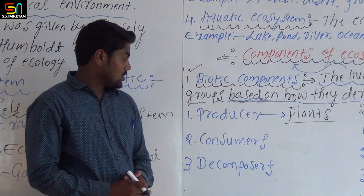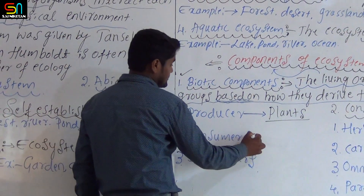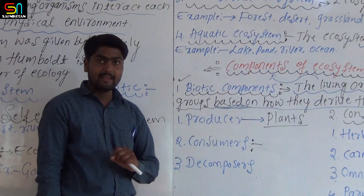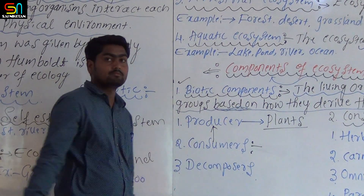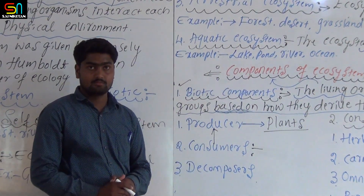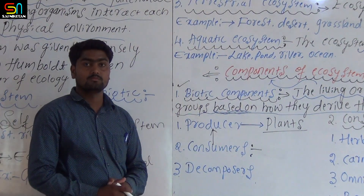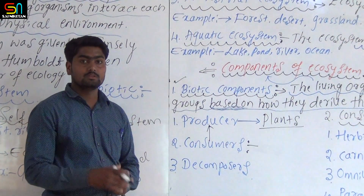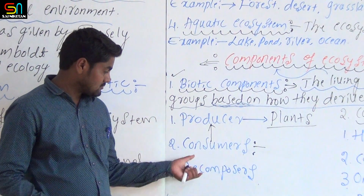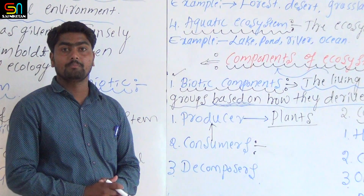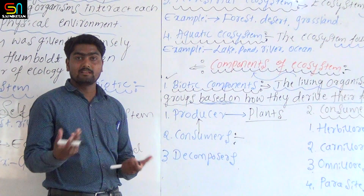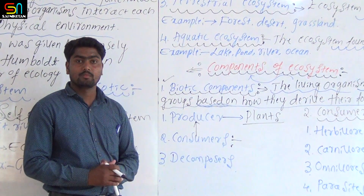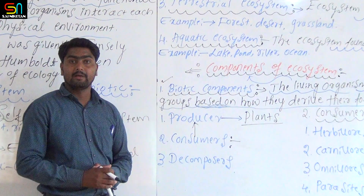Second, consumers: those organisms which directly or indirectly depend on producers. Examples include animals and human beings. Third, decomposers: organisms which feed on dead bodies of plants and animals — that is, either dead consumers or producers. Examples include bacteria and fungi.